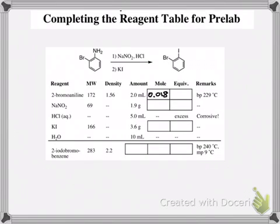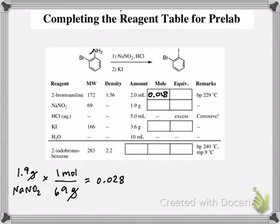Next, I want to calculate how much NaNO2 I have in terms of moles. And I see that from my experimental procedure, I have 1.9 grams of NaNO2. And so again, I can use the molar mass to convert that from grams to moles, because I know every 1 mole of NaNO2 is 69 grams. So my units are going to cancel, and I get 0.028 moles of NaNO2.